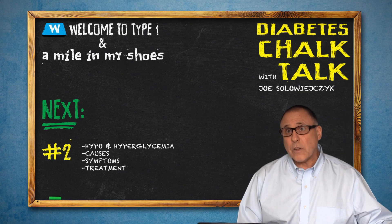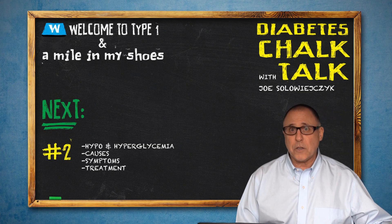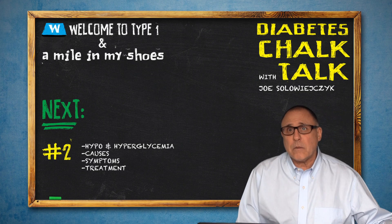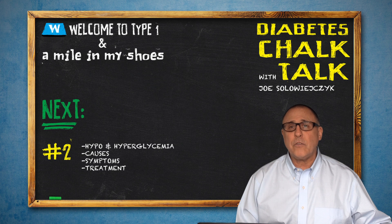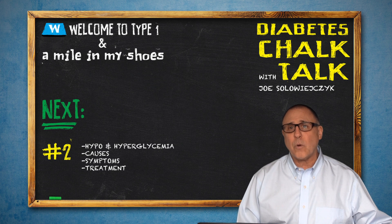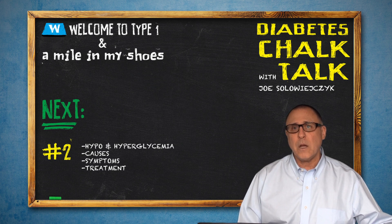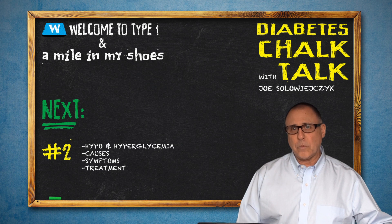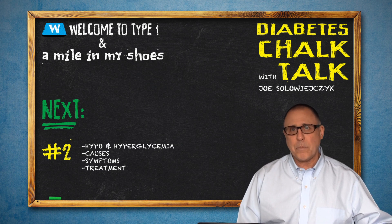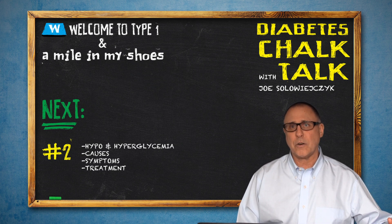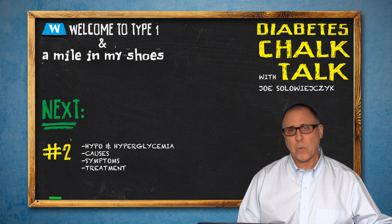That's it for today in terms of the introduction to diabetes. The next time we'll be talking will be about hypoglycemia and hyperglycemia — causes, symptoms, and treatment. Hypo and hyper just means low and high blood sugars, and we're going to be talking about what to do about that.